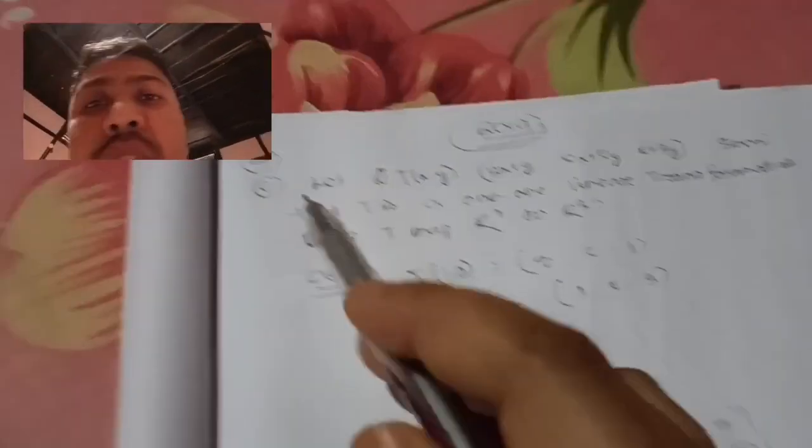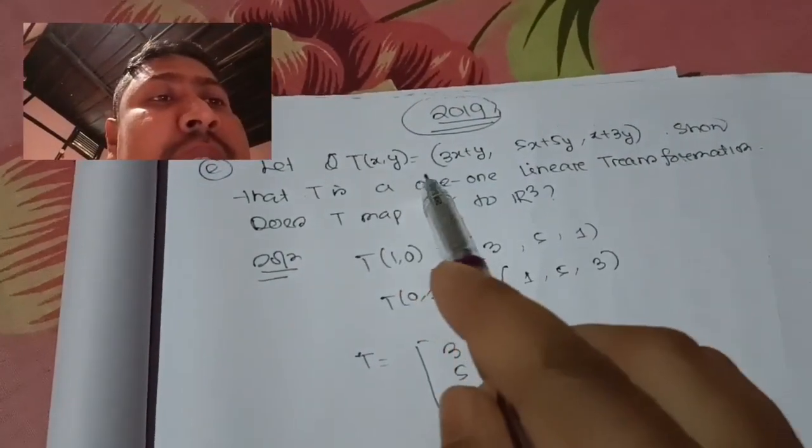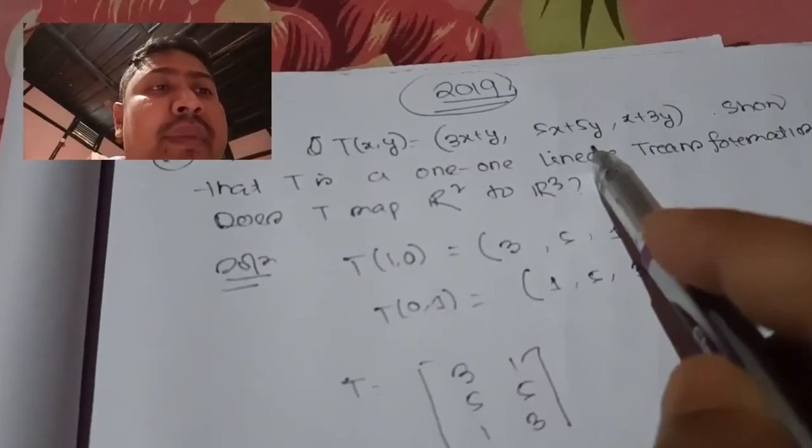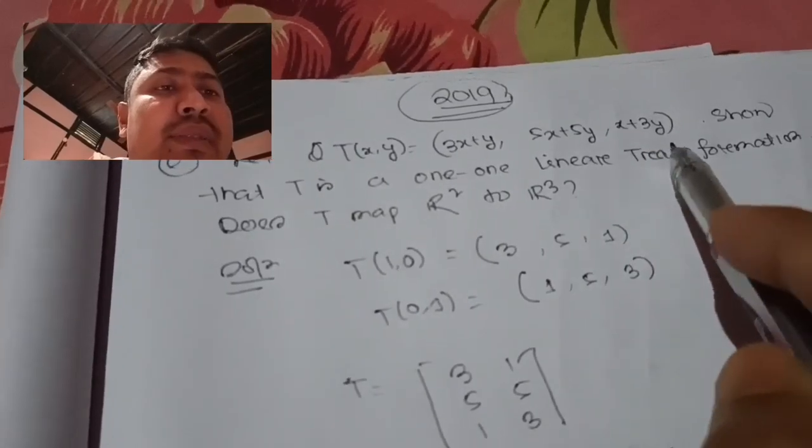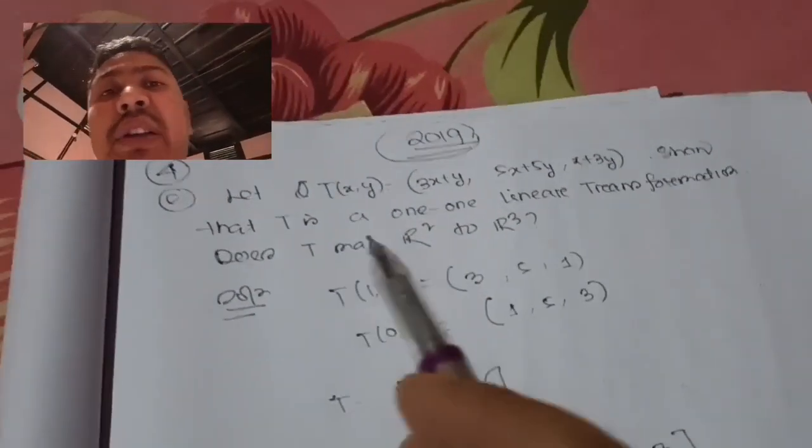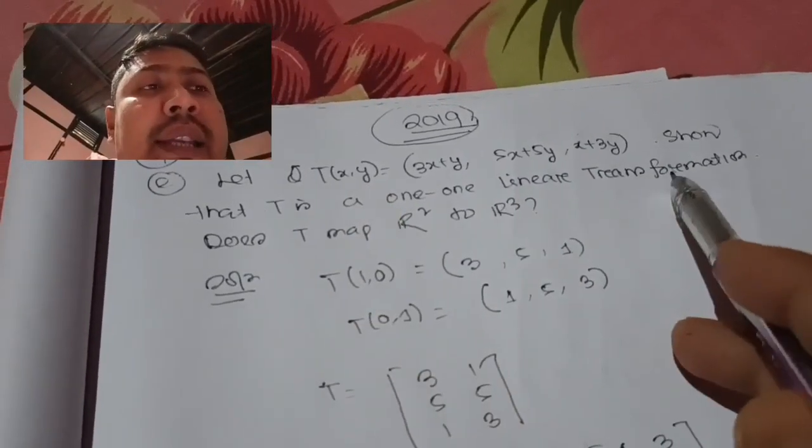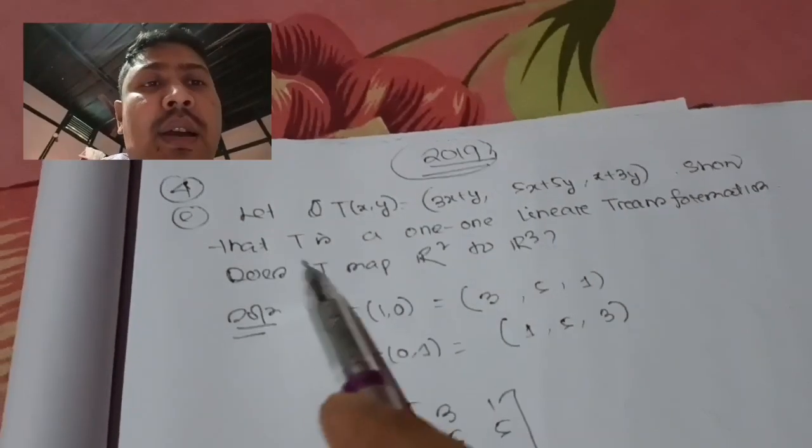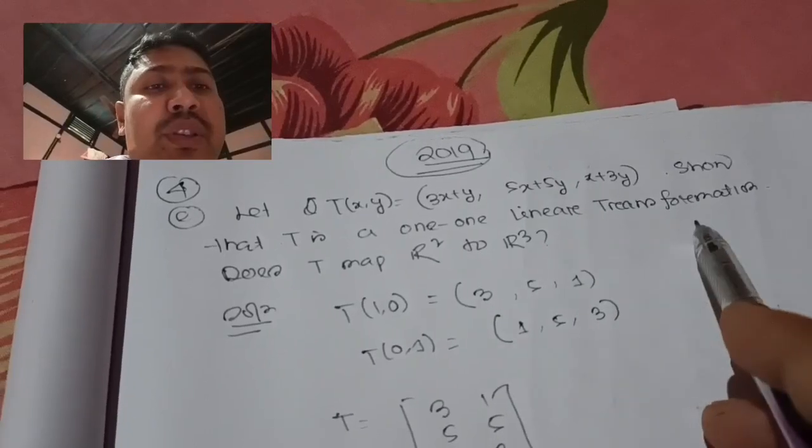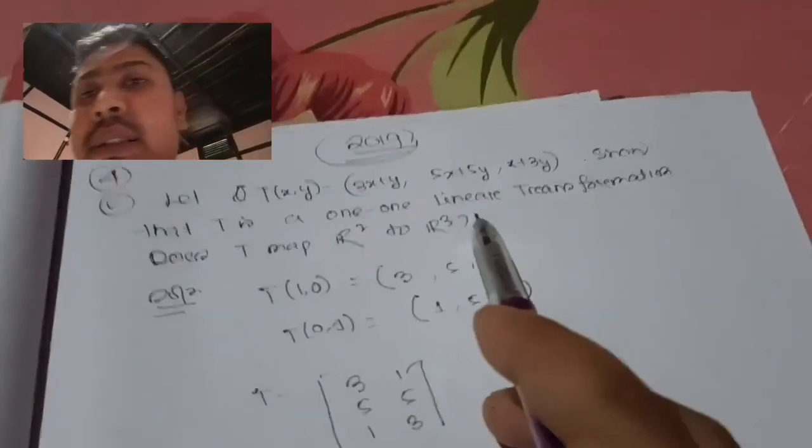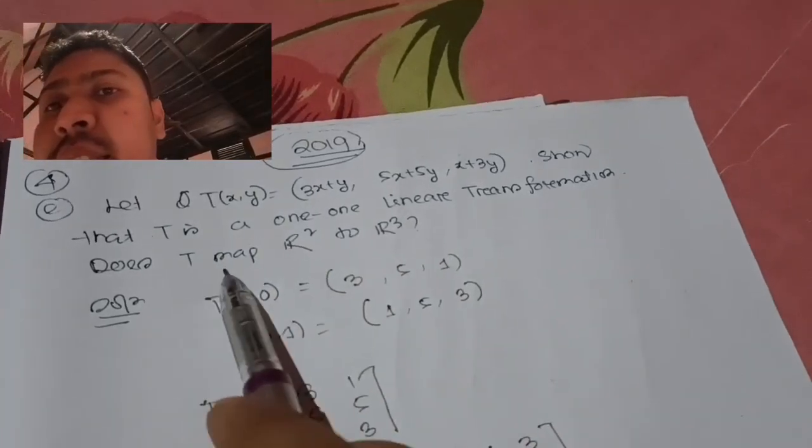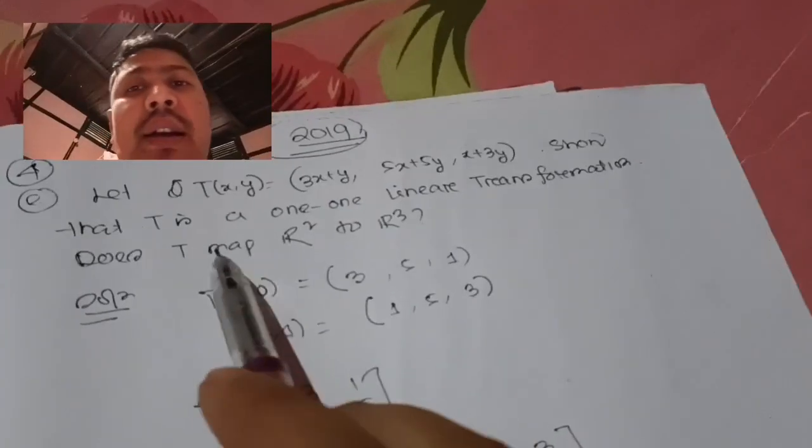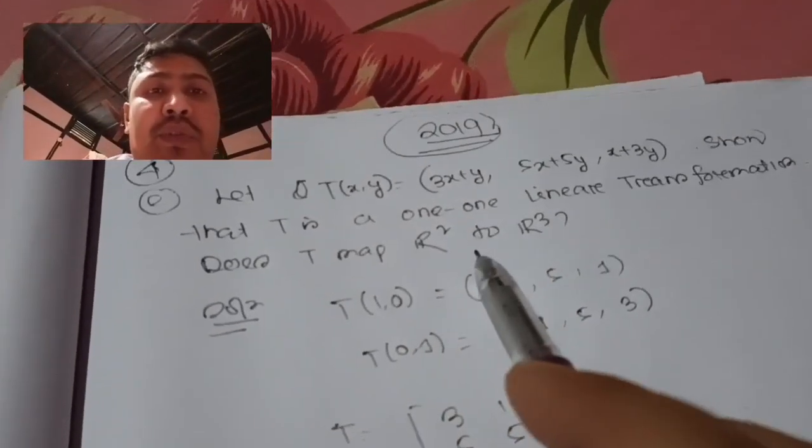Question number four: Let T(x,y) equal (3x+y, 5x+5y, x+3y). This defines a linear transformation. The question asks: is this a one-one linear transformation? Does the map from R² to R³ define a one-one linear transformation?